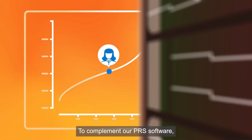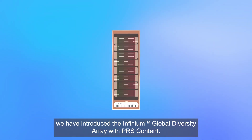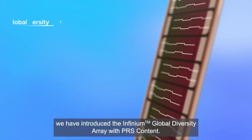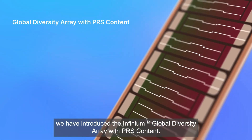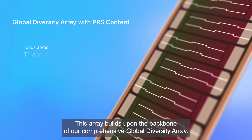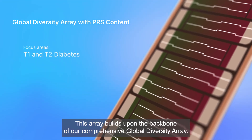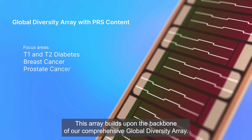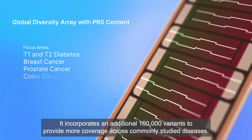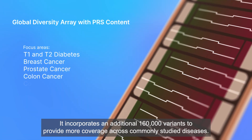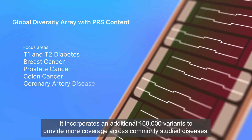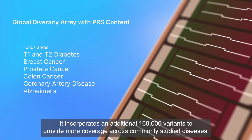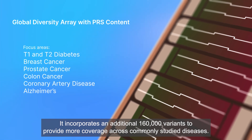To complement our PRS software, we have introduced the Infiniium Global Diversity Array with PRS content. This array builds upon the backbone of our comprehensive Global Diversity Array and incorporates an additional 160,000 variants to provide more coverage across commonly studied diseases.